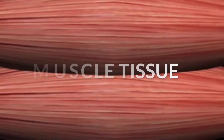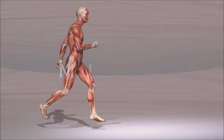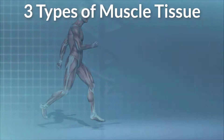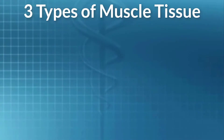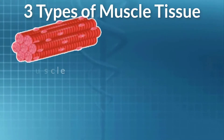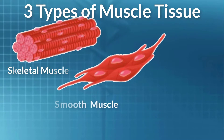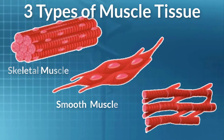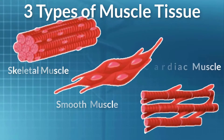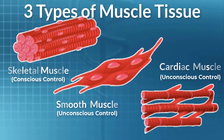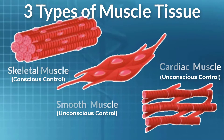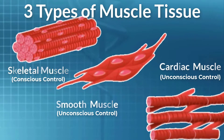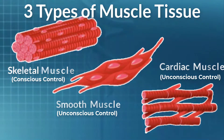Muscle tissue is excitable, responding to stimulation and contracting to provide movement. Muscle tissue occurs as three major types: skeletal muscle, smooth muscle, and cardiac muscle. Of these three, only skeletal muscle is under voluntary or conscious control.